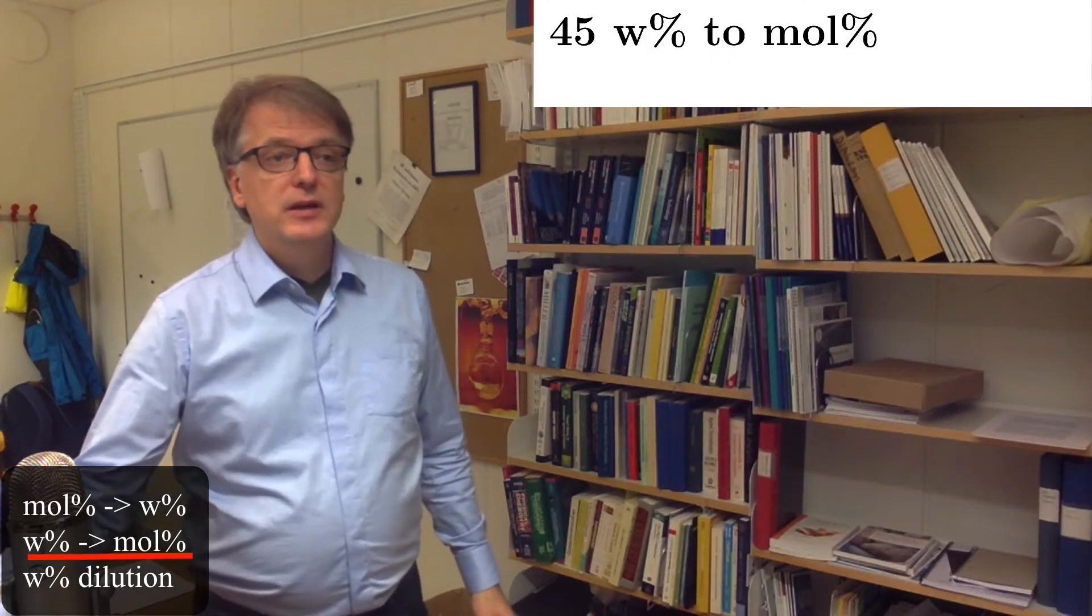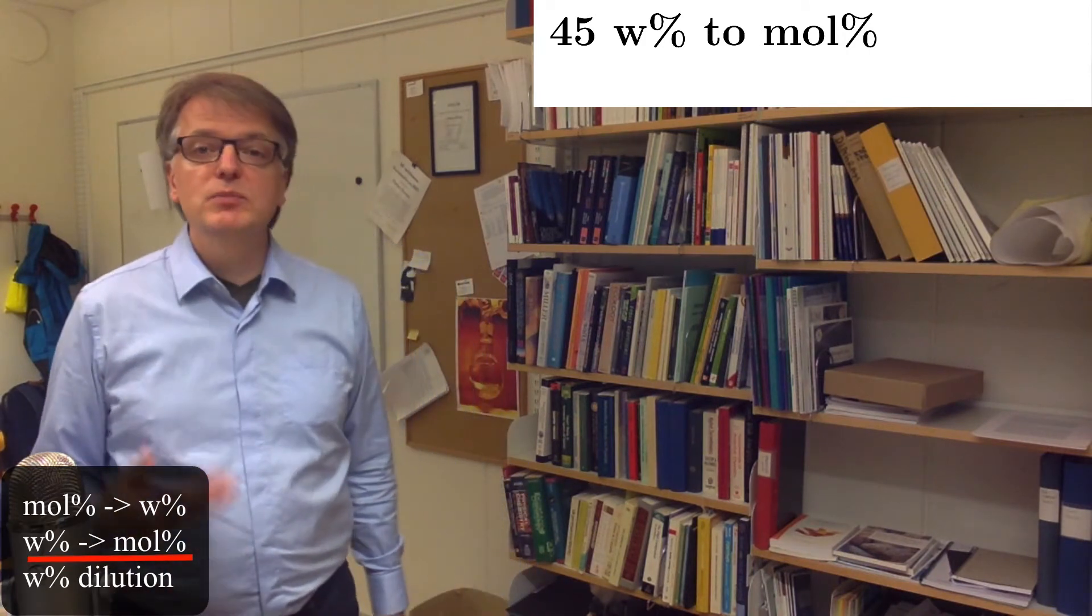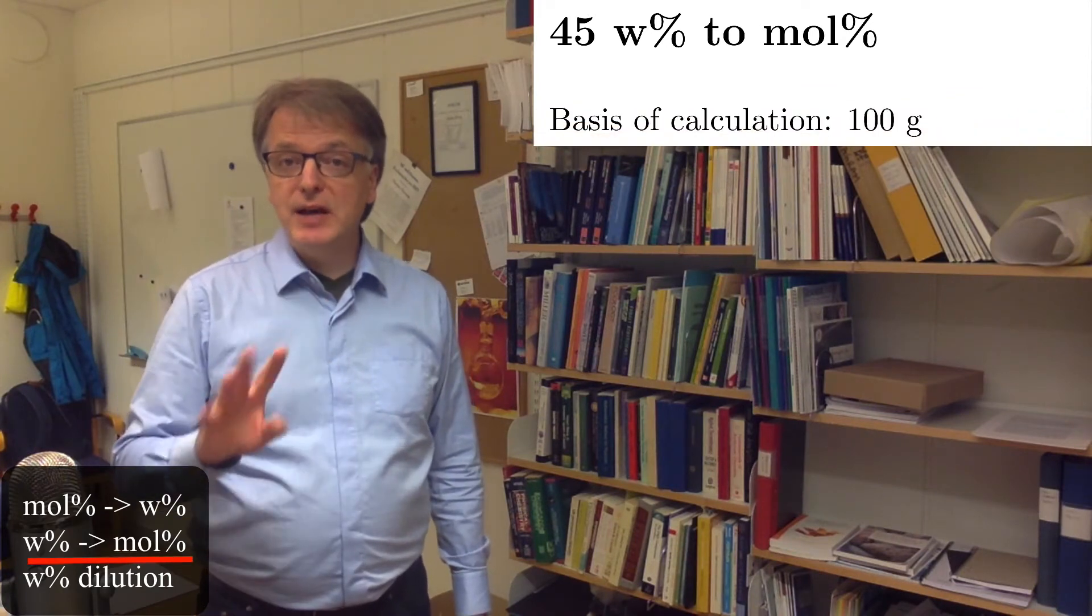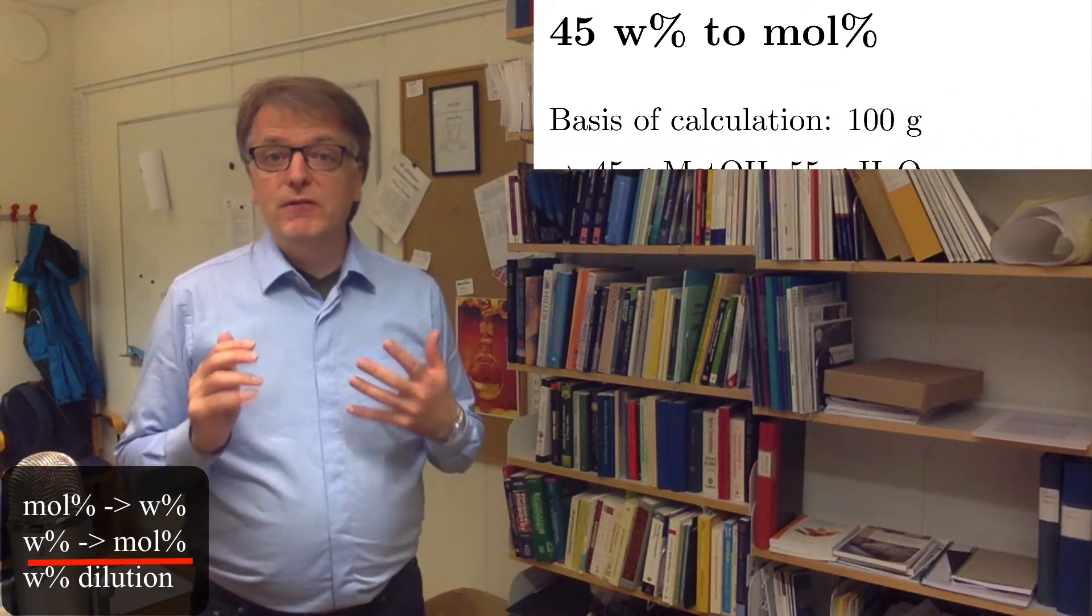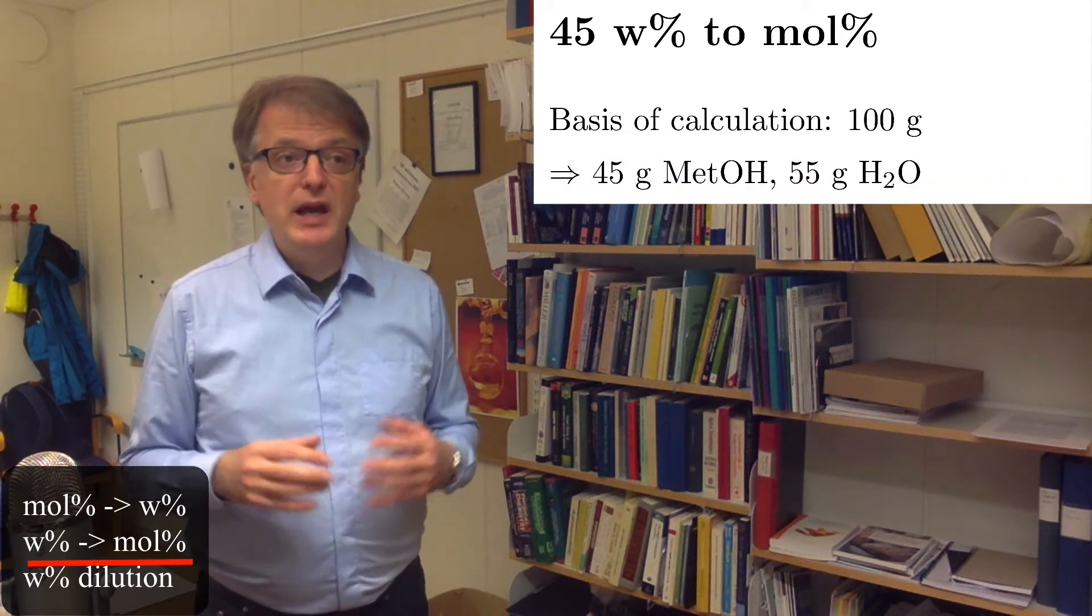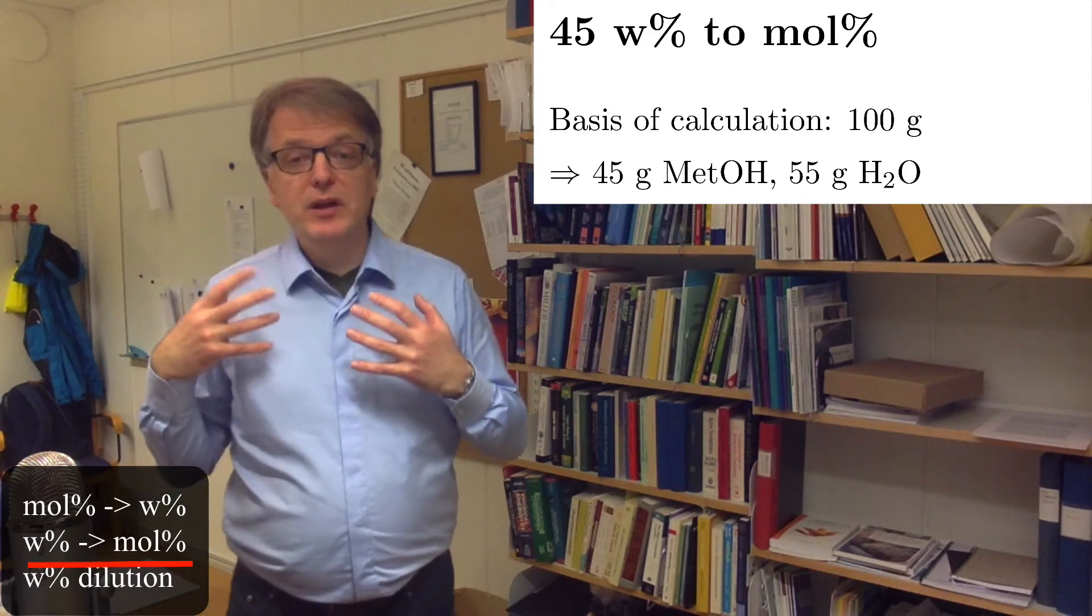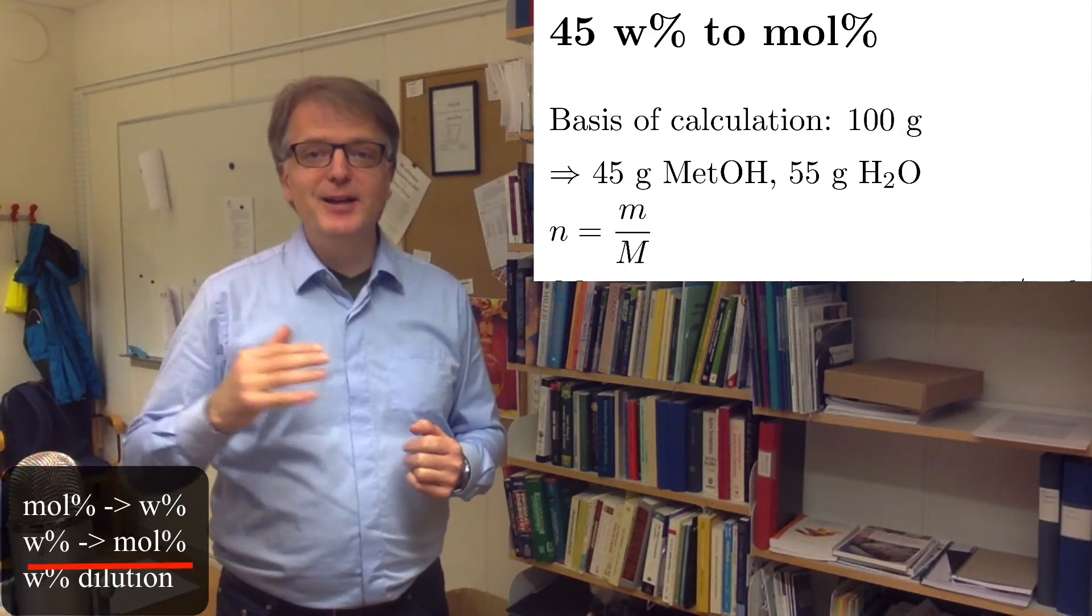Next problem, translate 45 weight percent of methanol in water to mole percent. Now, we use the basis of calculation 100 grams instead to make it simple. 100 grams means that we have 45 grams of methanol and 55 grams of water. We know that the number of moles is the mass divided by the molar mass.